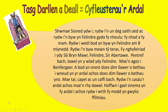And lastly, the third text: 'Shwmae, Sioned ydw i. Rydw i'n 17 oed a rydw i'n byw yn Felindre gyda fy nheulu, fy mam a fy nhad. Rydw i wedi bod yn byw yn Felindre am 8 mlynedd. Rydw i'n byw mewn tŷ teras. Fy nghyfeiriad i ydy 56 Bryn Mawr, Felindre, Sir Abertawe. Pentref bach tawel yn y wlad ydy Felindre. Mae'n agos i Bentllwchwr. A bod yn onest, does dim llawer o bethau i wneud yn yr ardal achos does dim llawer o bethau yno — mae tai, capel ac un caffi bach. Rydw i'n casáu'r ardal achos mae'n rhy dawel. Hoffwn i gael sinema yn fy ardal i achos rydw i wrth fy modd yn gwylio ffilmiau.'